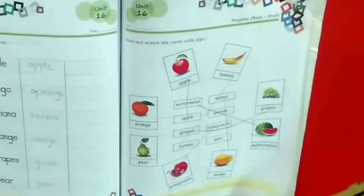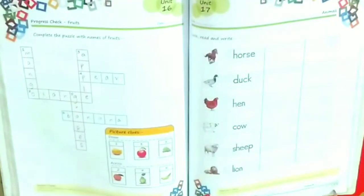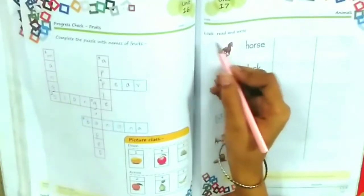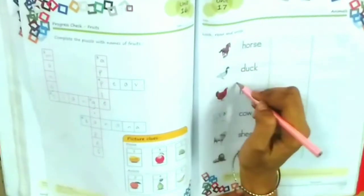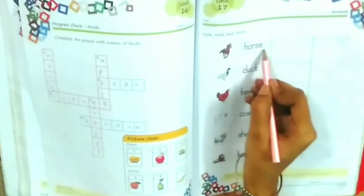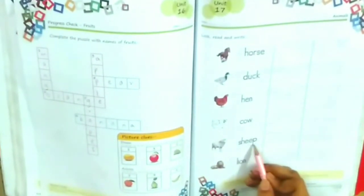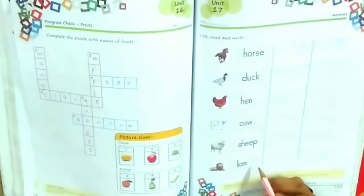Then page number 53. The question is: look, read and write. These are the animals. H-O-R-S-E, horse. D-U-C-K, duck. H-E-N, hen. C-O-W, cow. S-H-E-E-P, sheep. L-I-O-N, lion.